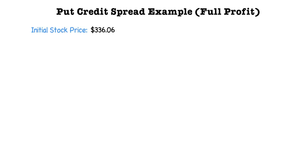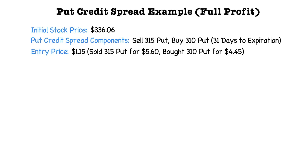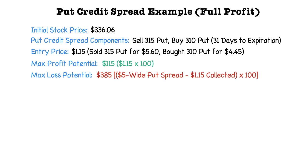Now let's take a look at a put credit spread example. The initial stock price is $336.06, and the credit spread we're looking at is selling the $315 put and buying the $310 put with 31 days to expiration. The entry price of this put credit spread is $1.15, since the $315 put was sold for $5.60 and the $310 put was purchased for $4.45 — a net credit of $1.15. The maximum profit potential of this put credit spread is $115, and the maximum loss potential is $385, since the put spread is $5 wide and $1.15 was collected, giving $3.85 of loss potential times 100.